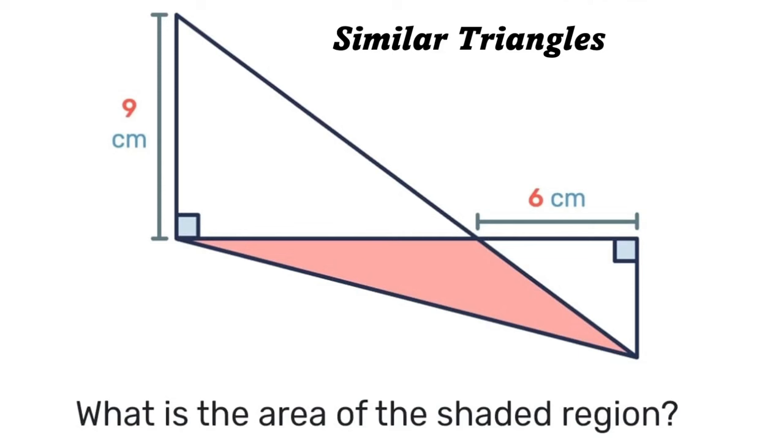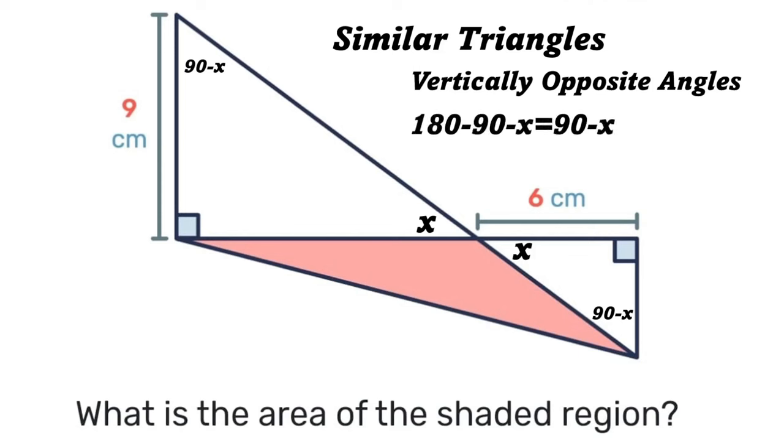So first, if that angle is x, then that angle will also be x because those are what we call vertical opposite angles. Also, if this angle here is 90 minus x, then that angle will also be 90 minus x.